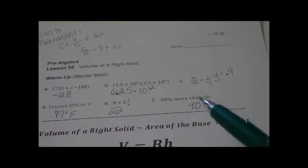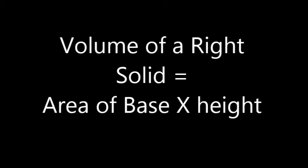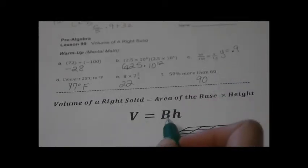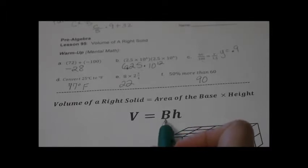Now we're going to talk about the volume of a right solid. It's important to know the formula: volume of a right solid equals area of the base times the height. The big capital B usually means area of the base — a little b would be the length of a base in other formulas. So capital B means area of base times height.